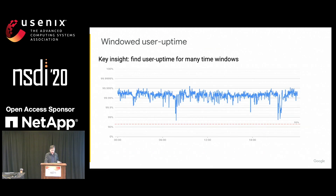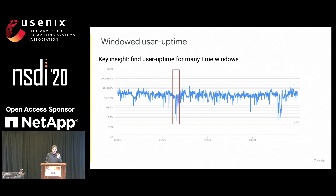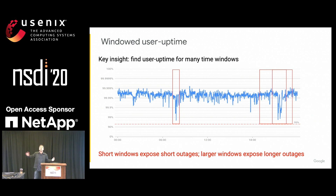We care about short outages, so what we do is window our data. We find user uptime not just over a month or a quarter, but over a large number of time windows starting from one minute onwards. We create a window, slide it across the data, and find the worst availability of that window. Then we try a bigger window size and do the same. The end result is availability for many different window sizes, where shorter windows give insight into short unavailability events and larger windows give insight into longer or larger unavailability events.